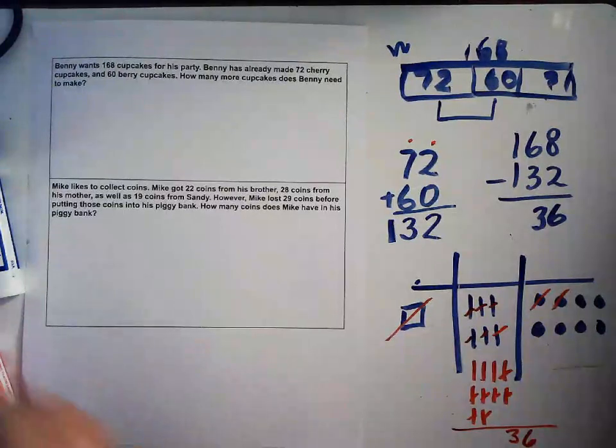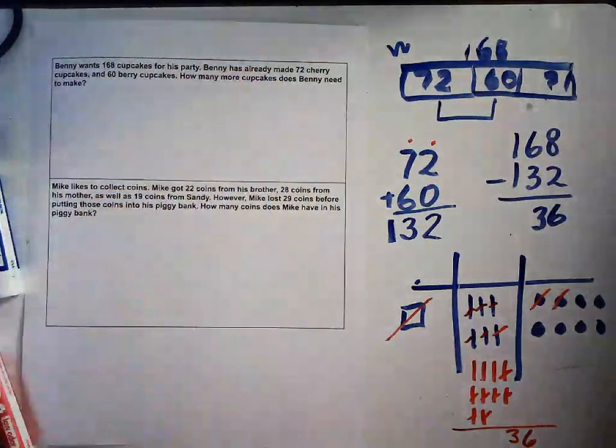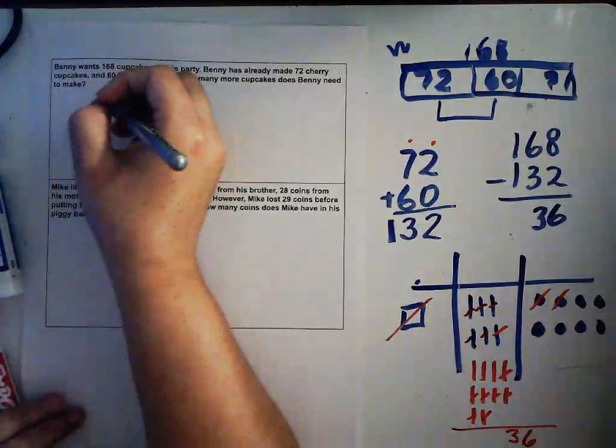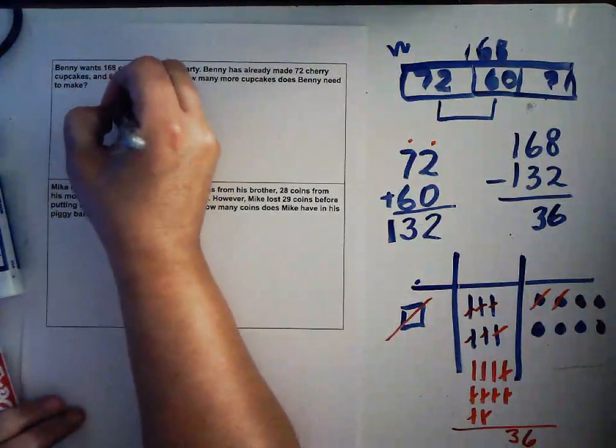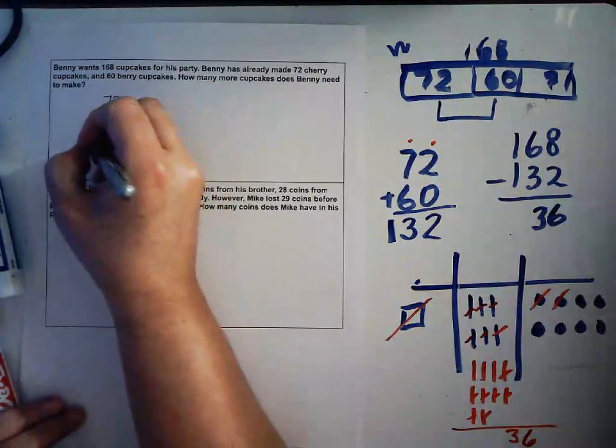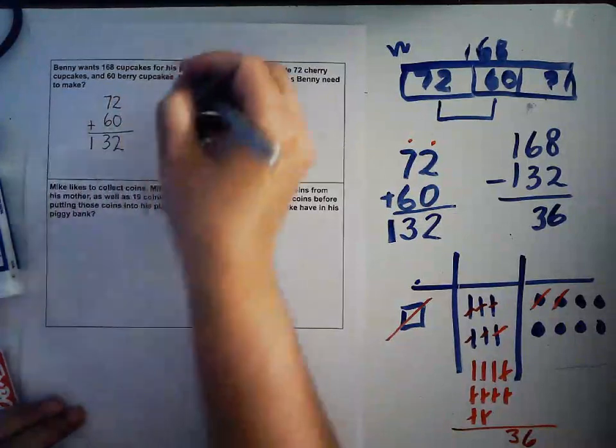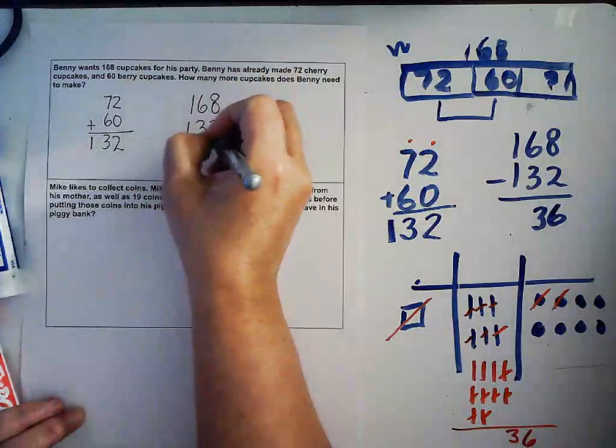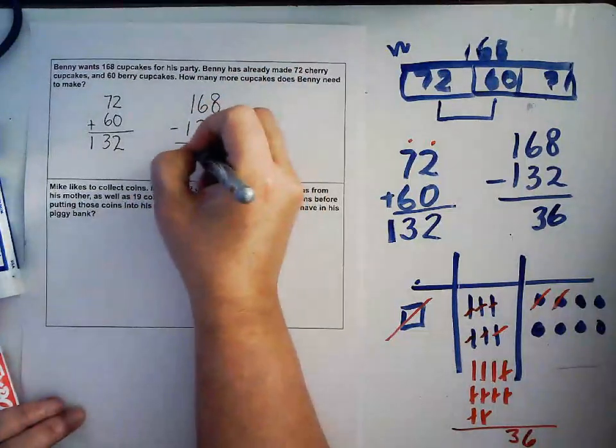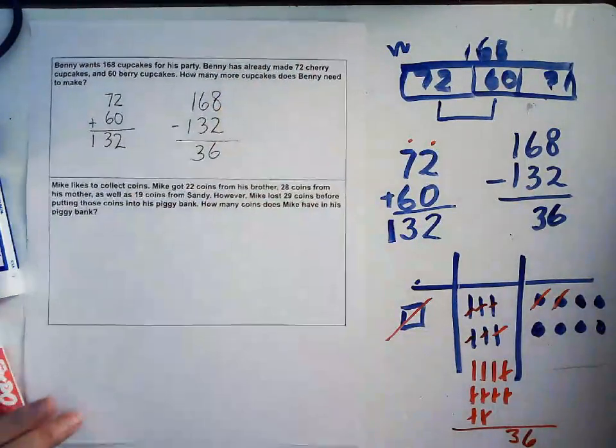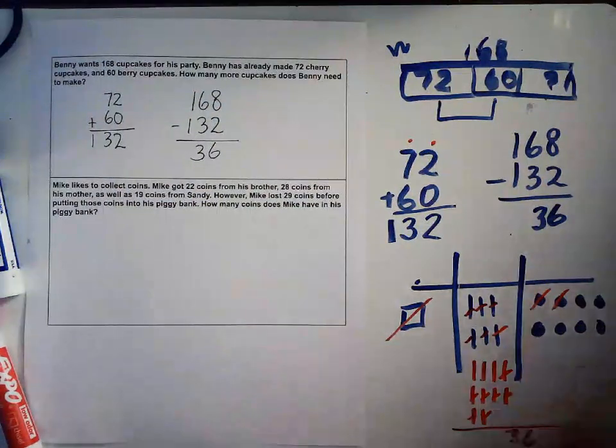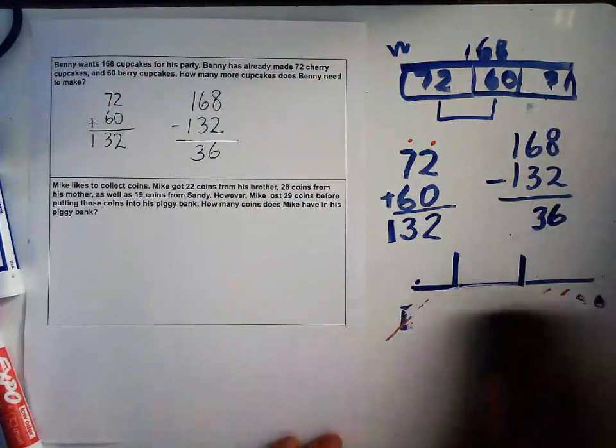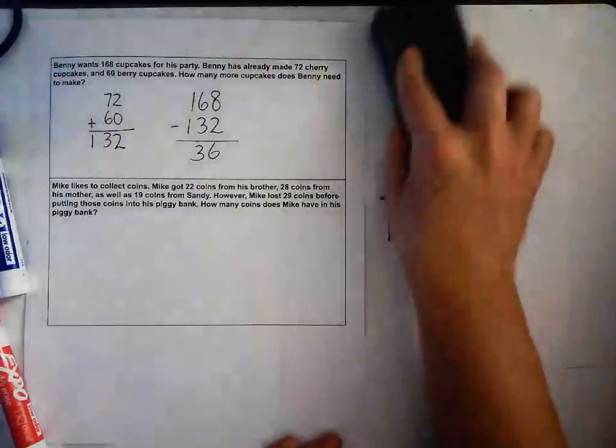My answer is, you can do it in different ways. You can add 60, that gives you 132, and then subtract 132 from 168, which gives you 36. That's your answer. Let's work on the next one.